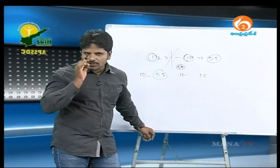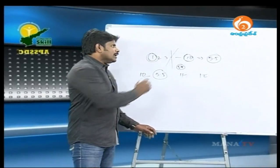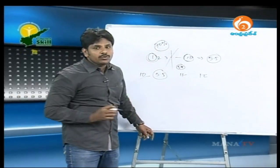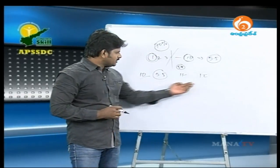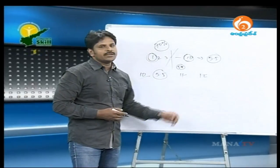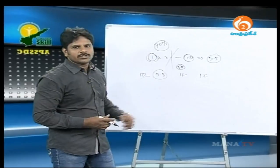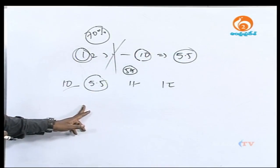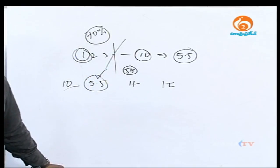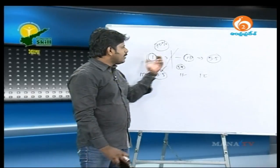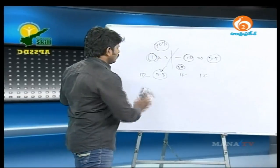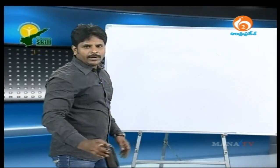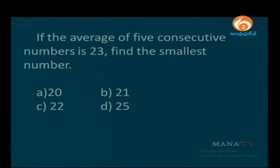In competitive exams, logical implementation is very important. Seventy percent of questions can be solved by using answer options. Always check answer options first. For consecutive numbers, the average lies between the minimum and maximum, so you can eliminate options accordingly. The average of 5 consecutive numbers is 23 — find the smallest number.